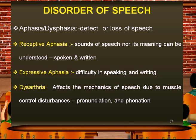Speech disorders commonly accompanying hemiplegia include aphasia or dysphasia, which may be transient or prolonged. Receptive aphasia means sounds or speech and their meaning cannot be understood — either spoken or written. Expressive aphasia involves difficulty in speaking and writing, which can be assessed by asking the patient to write and evaluating the listening component. Dysarthria affects the mechanics of speech due to muscle control disturbances, affecting pronunciation and phonation.